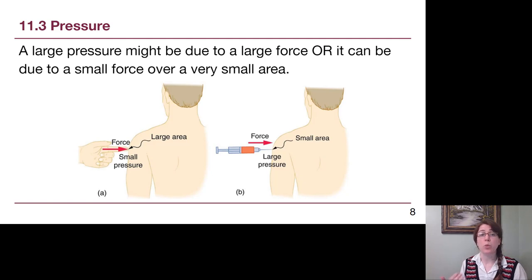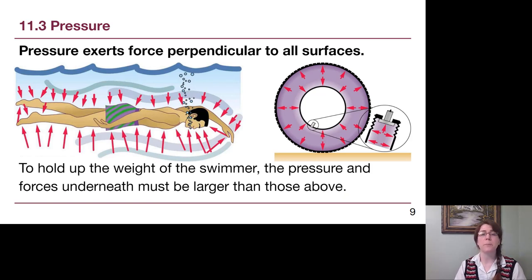If we think about that idea of pressure, we can have a large pressure because of a large force, or we could have a really large pressure because there's a very small area. A small number on the bottom of that fraction means that we have a large pressure. Needles for vaccines are able to pierce the skin because it's such a small needlepoint, that small area creates a big enough pressure. Pressure is always exerting forces perpendicular to all of the surfaces.